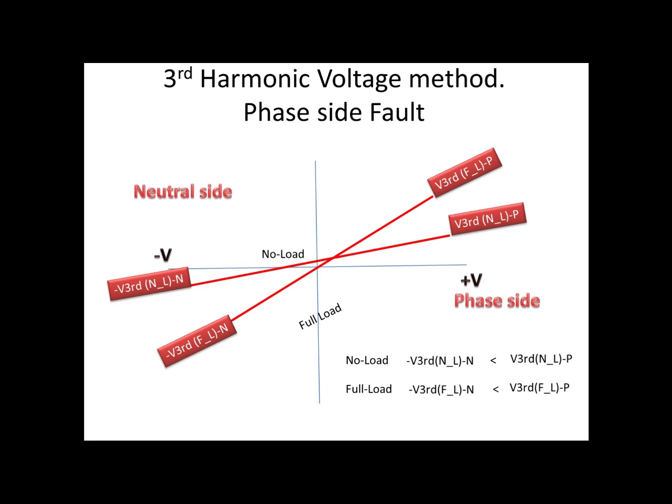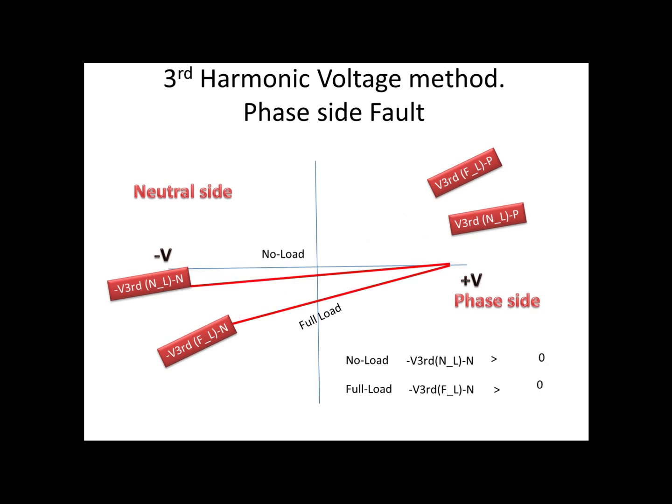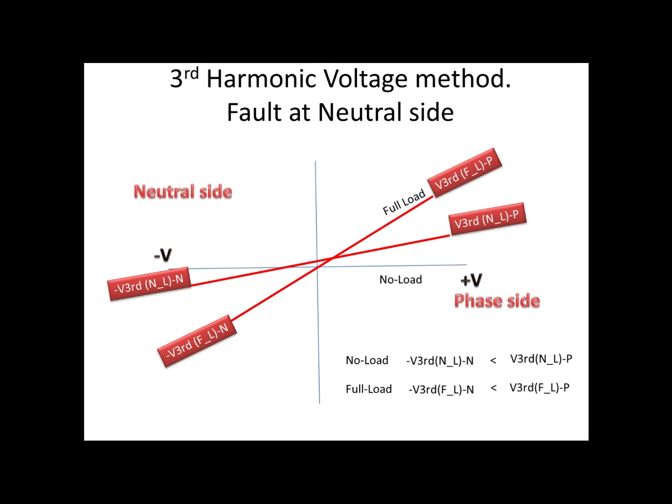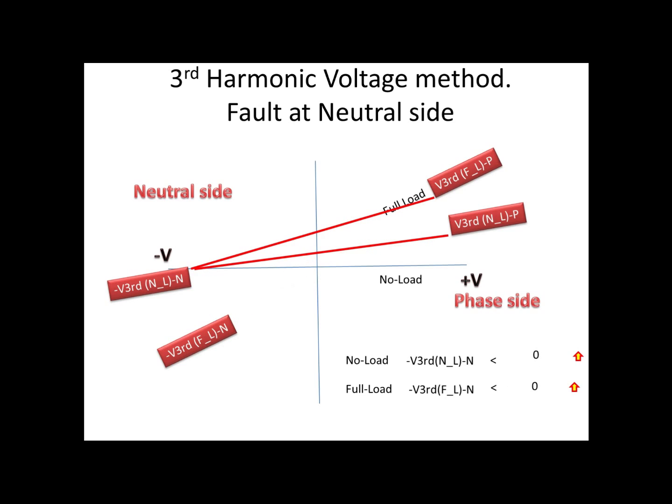This is the running condition. Now we will see on fault condition. Let us consider the fault on the phasor side of the winding. Then the third harmonic voltage on the phasor side is zero for both no load and full load condition. Now we will see the fault on the neutral side. In this case, the third harmonic voltage on the neutral side will become zero even on no load and full load condition.